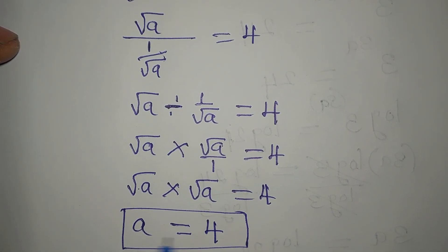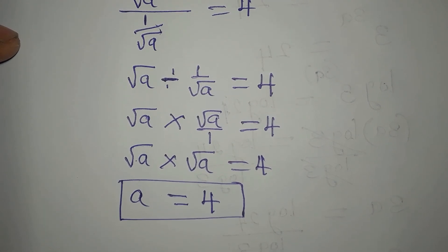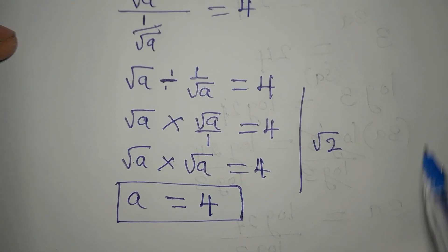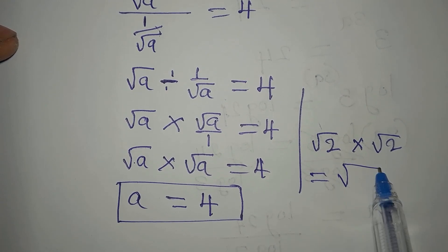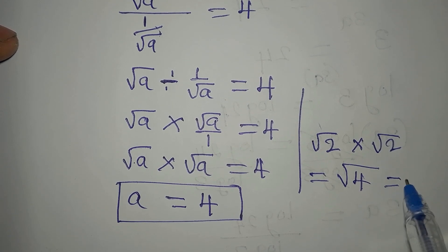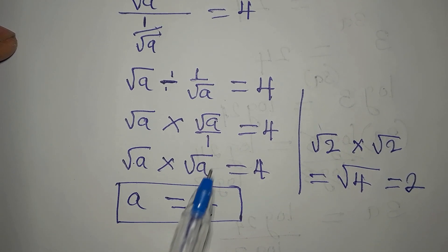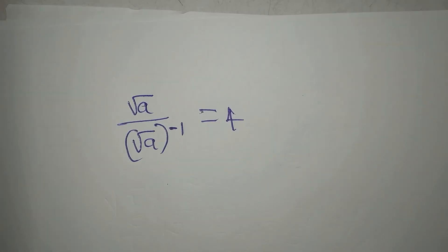Let me confirm this. Imagine a stands for two — we have root two multiplied by root two. This equals root four, and square root of four is two. So when you multiply root two times root two you get two. Therefore root a times root a equals a. So a equals four is our value using the first method. Now let's go to the second method.